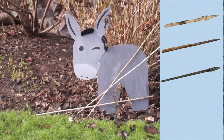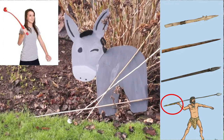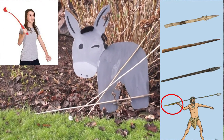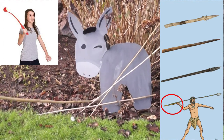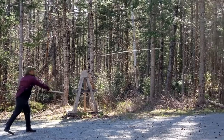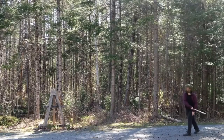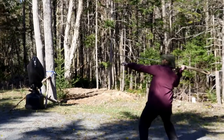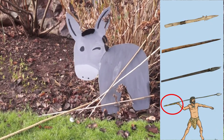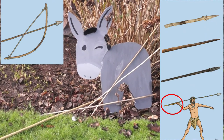Before long they had atlatls — like the devices you throw a dog ball with — which made spears go further. An atlatl hooks onto the back of a spear and you push it forward, allowing it to go almost twice as far. And finally they developed the bow and arrow, which let them pick off their dinner from a distance.